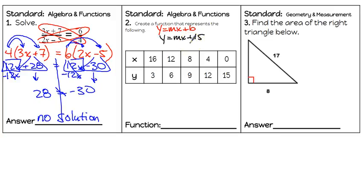Now we're going to look for our constant rate of change, which is the change in Y over the change in X. We'll start with the Y values: from 3 to 6 we're adding 3, 6 to 9 adding 3, 9 to 12 adding 3, 12 to 15 adding 3.